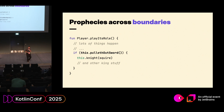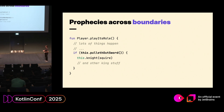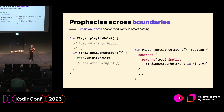The problem is if I put this thing in a function, it stops working. The compiler cannot know what is the body of this function — it tries to act as if it couldn't look inside. It doesn't know what 'pullOutSword' is doing. But there is something in the language which helps us do this, and these are contracts. Contracts are the way in which we can propagate information about smart casting across function boundaries.